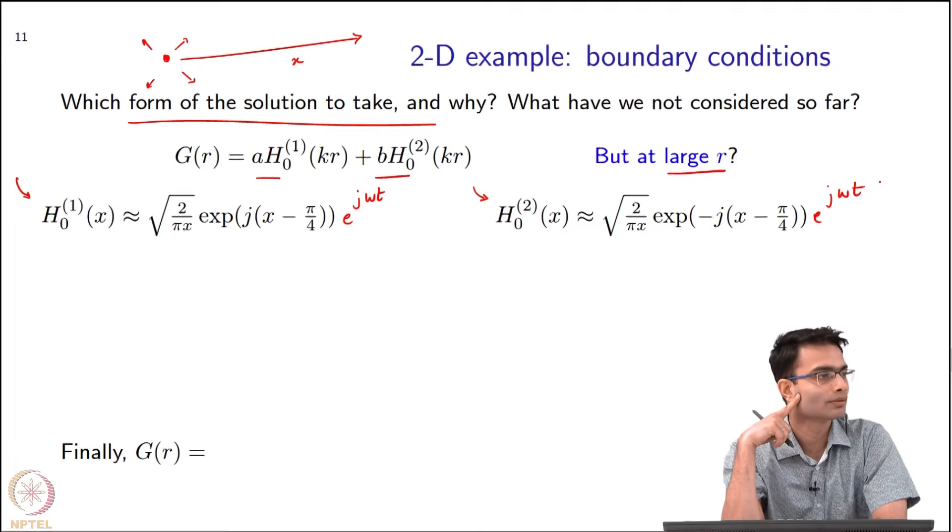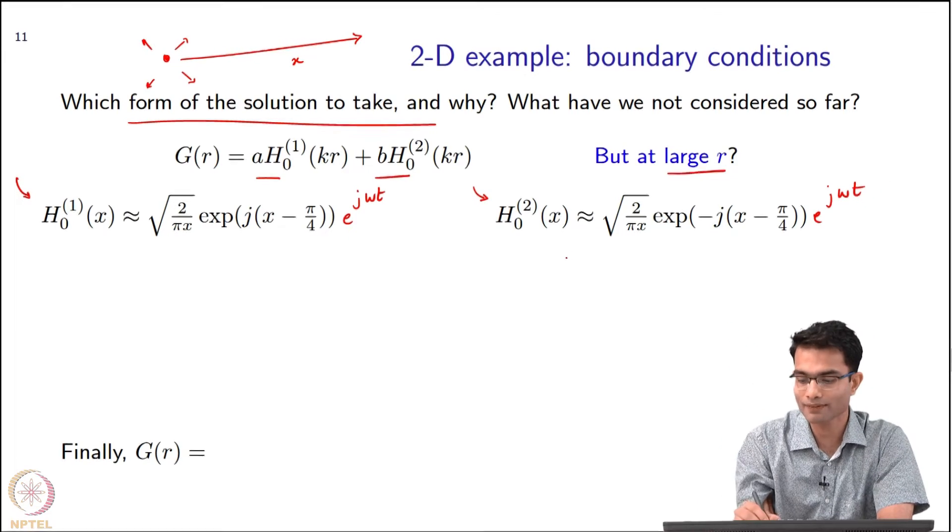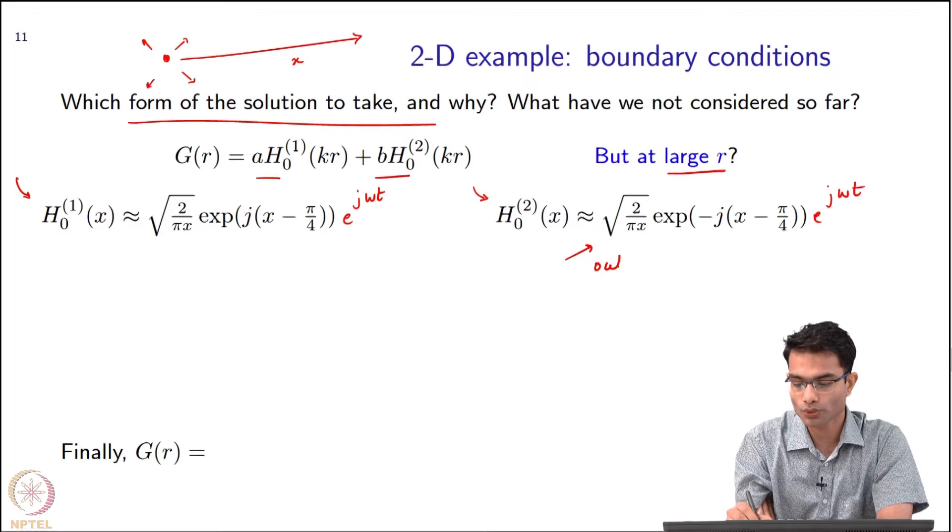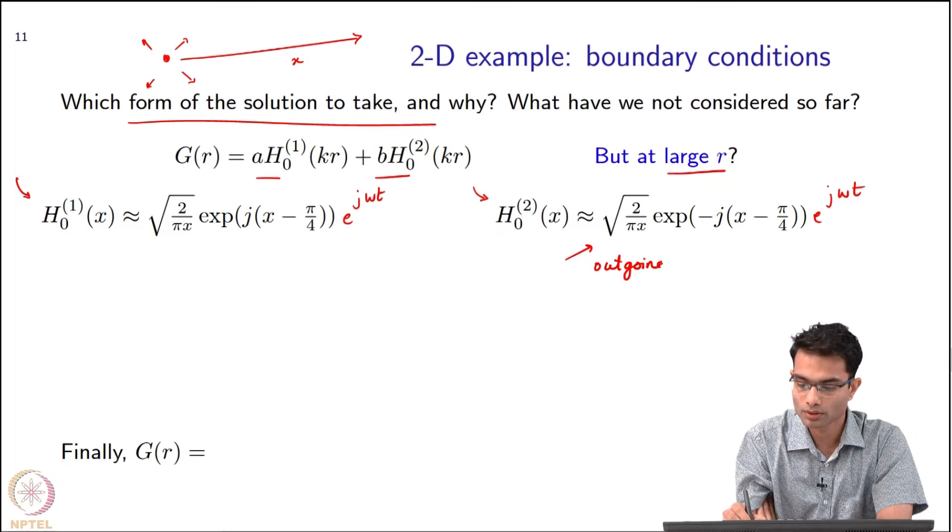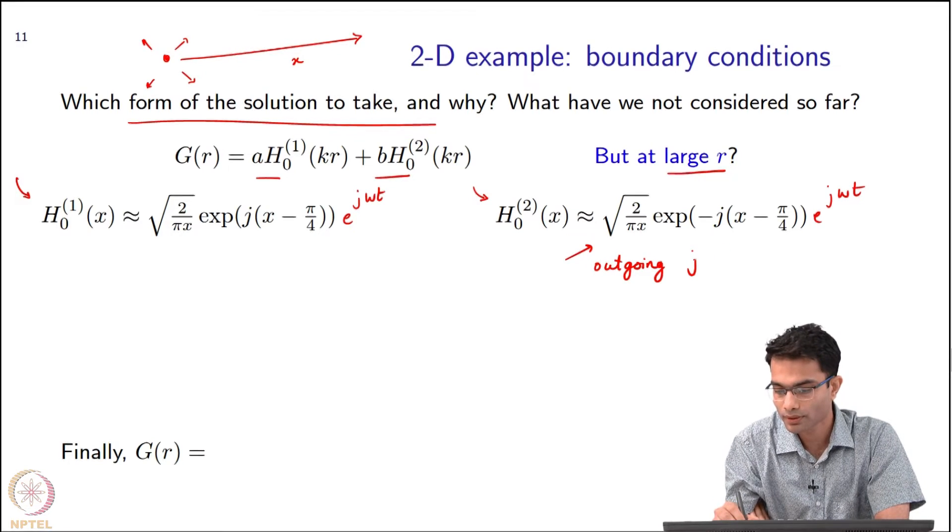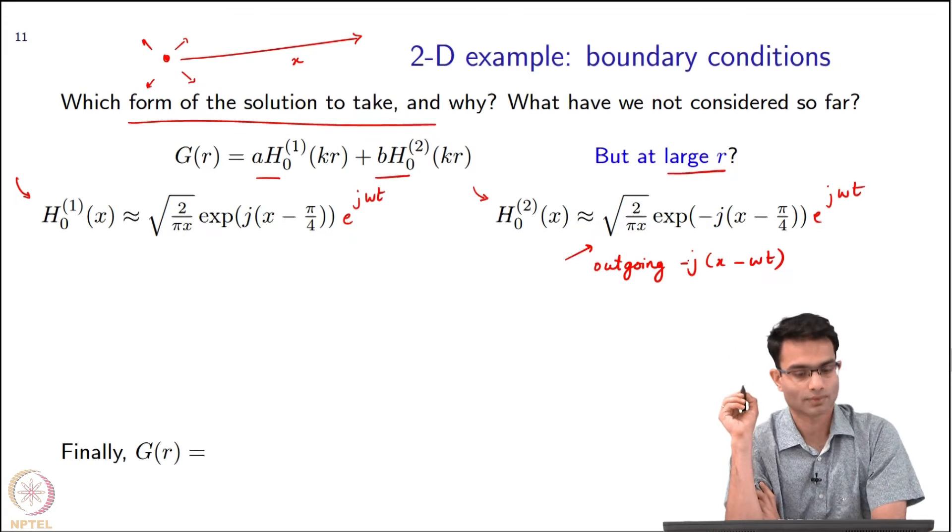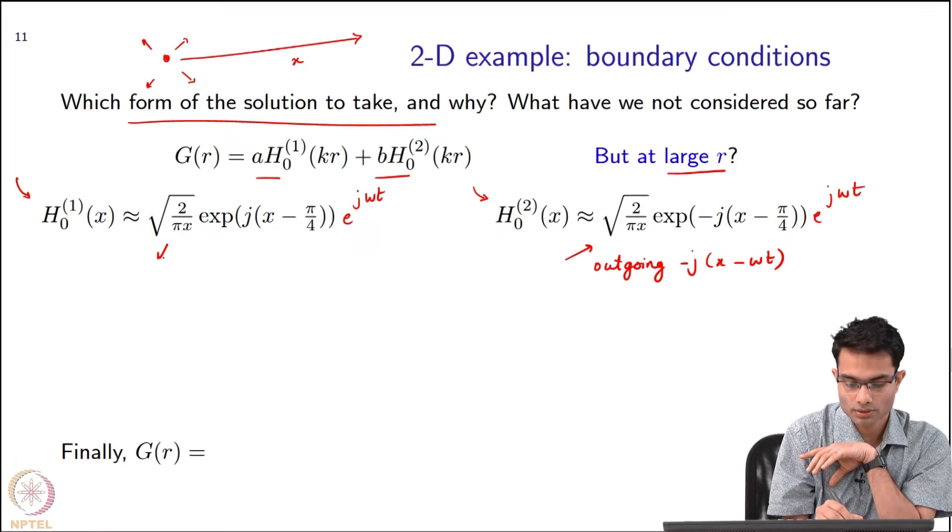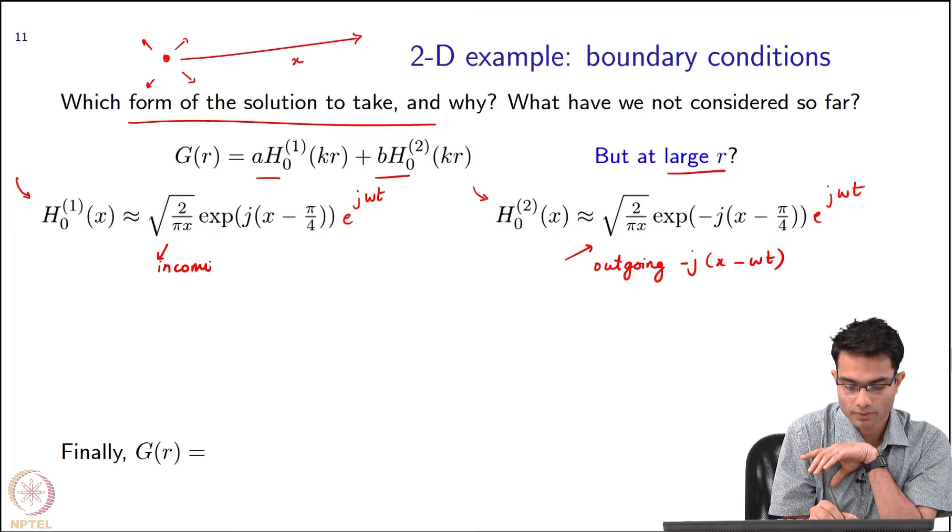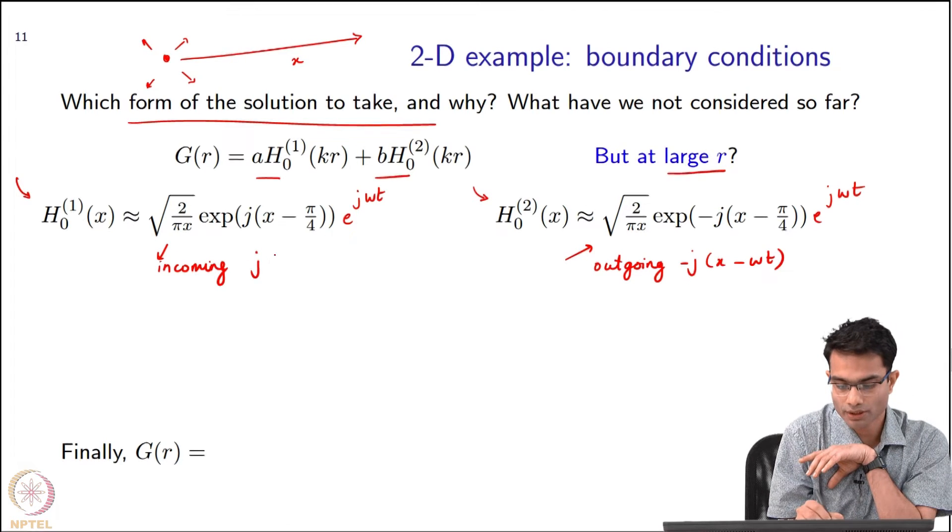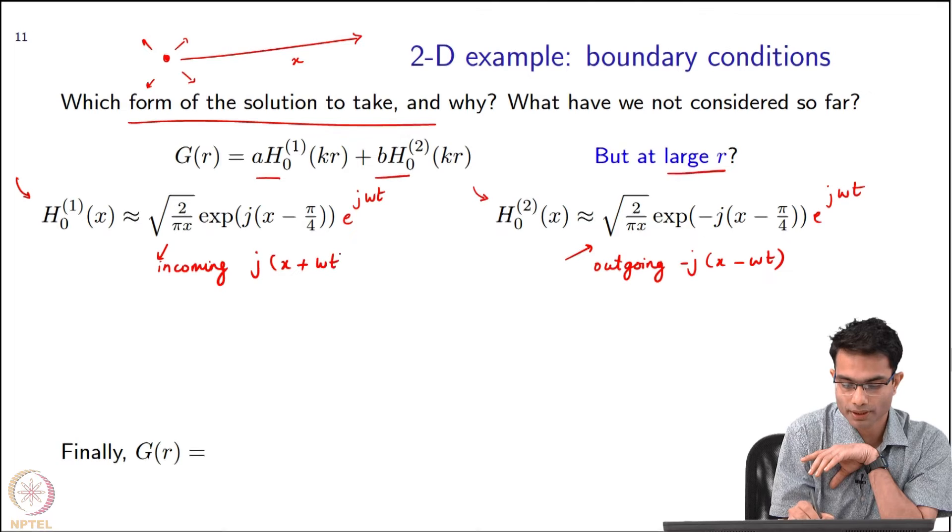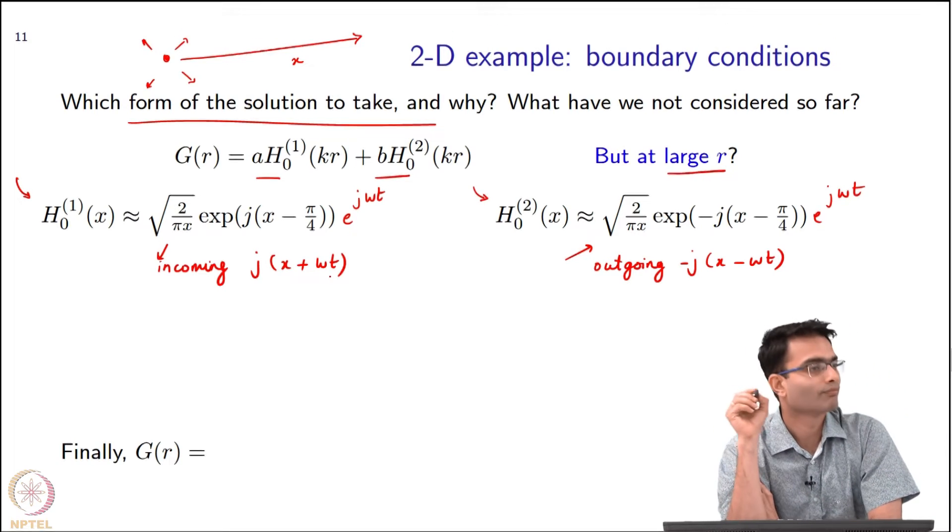Are both waves outward? No. Only the second wave corresponds to an outgoing wave because it is a j of x minus ωt, right? And this, on the other hand, is incoming. Incoming wave because it is a j of x plus ωt, right.